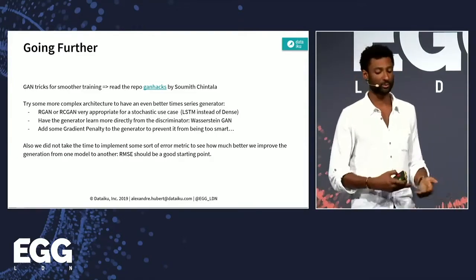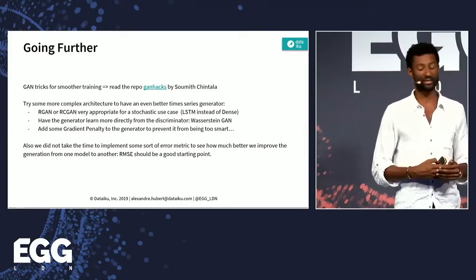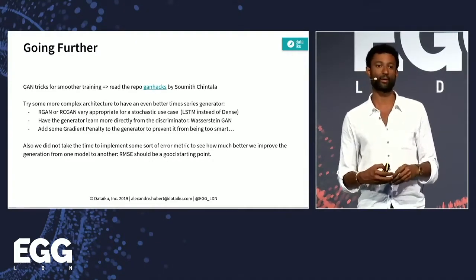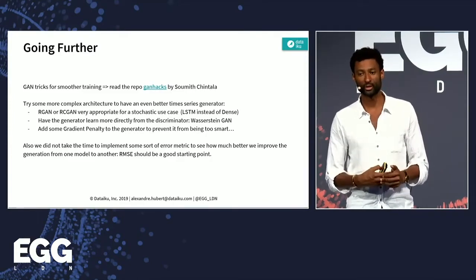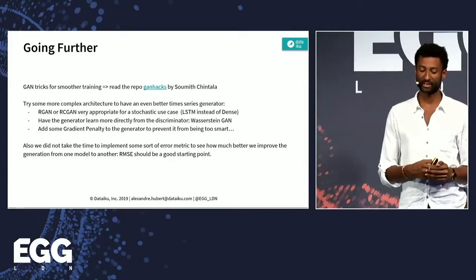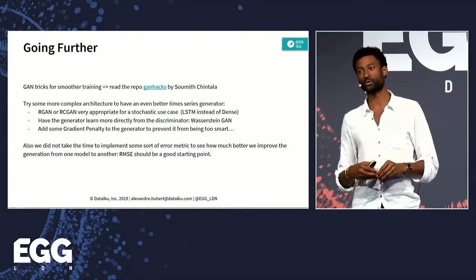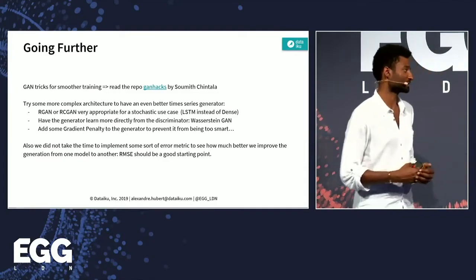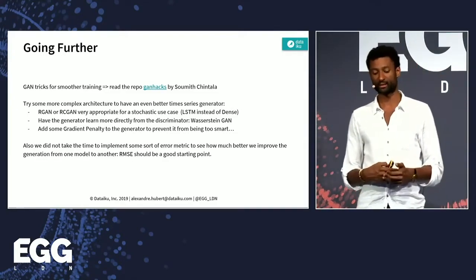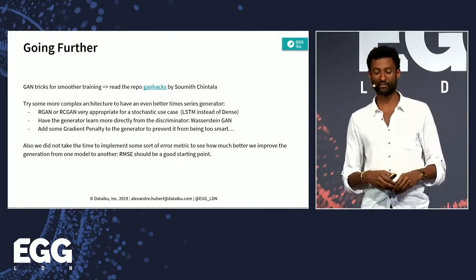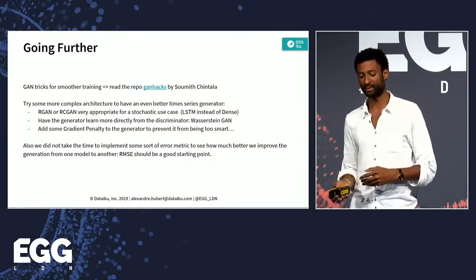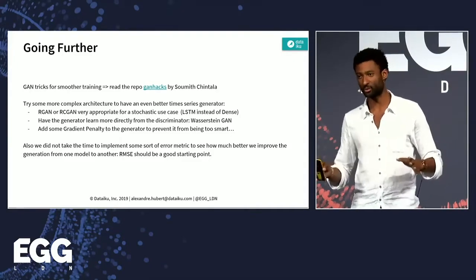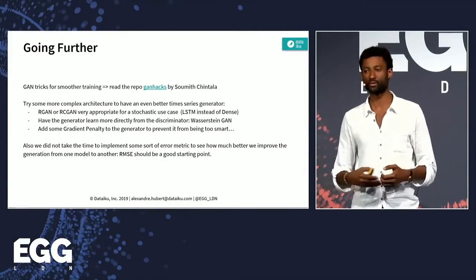Be careful though — GANs are well known to be difficult to train and converge. I found the GAN hacks repo by Soumith Chintala — it's extremely good for achieving good results in a limited amount of time and avoiding common pitfalls. There are plenty of ideas there that can be applied. For instance, we didn't implement the gradient penalty on the generator to prevent it from identifying areas that are good enough to fool the discriminator but don't actually look like the target distribution — that's something worth adding.